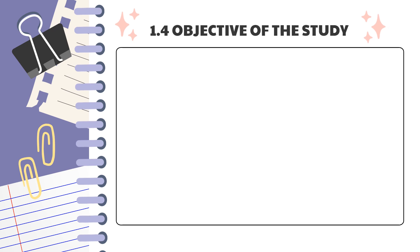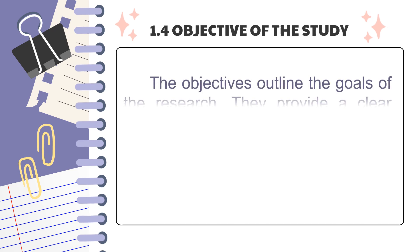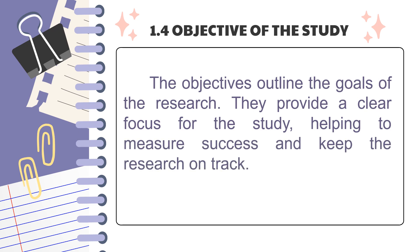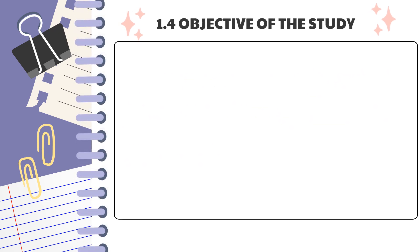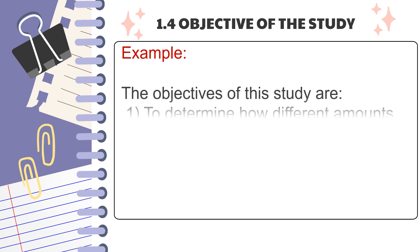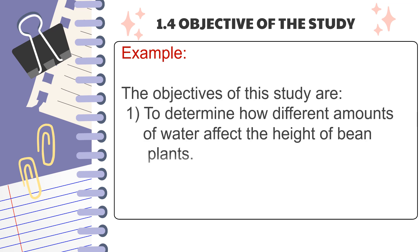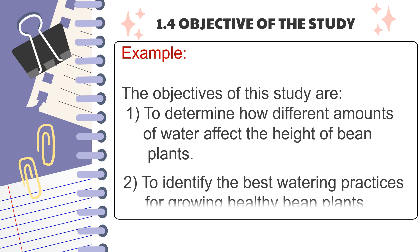The next component is the objectives of the study. The objectives outline the goals of the research, providing a clear focus, helping to measure success, and keeping the research on track. Example: The objectives of this study are: one, to determine how different amounts of water affect the height of bean plants; two, to identify the best watering practices for growing healthy bean plants. These objectives are well-defined, achievable, and relevant to the overall purpose of the study.